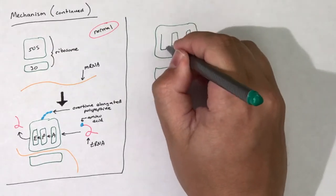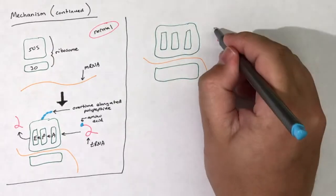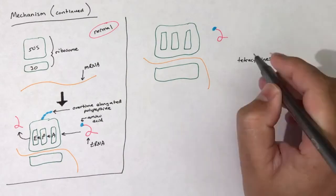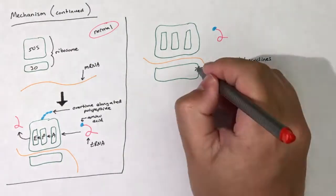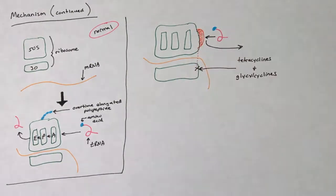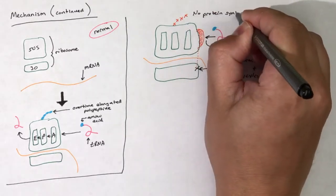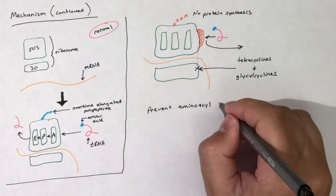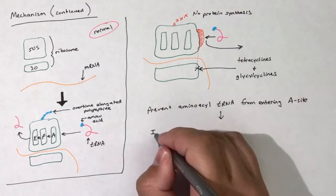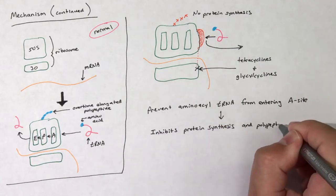Specifically, tetracyclines and glycylcyclines bind the 30S ribosomal subunit and prevent aminoacyl tRNA from entering the acceptor A site on the bacterial ribosome. This in turn inhibits protein synthesis by indirectly blocking polypeptide elongation.